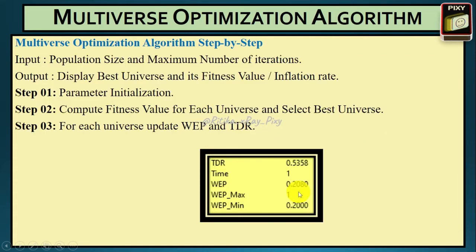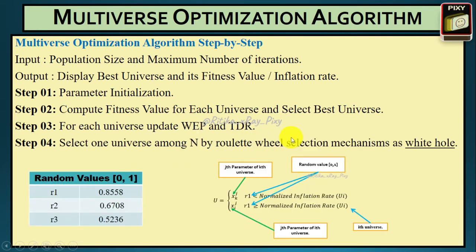In step three we update the values for WEP and traveling distance rate. In step four we select one universe among N using the roulette wheel selection mechanism as the white hole. Now we are going to create a white hole and a black hole.